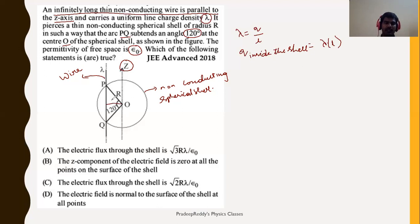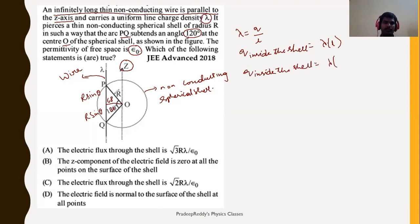Since the total angle is 120 degrees, each half-angle is 60 degrees. The half-length of the chord inside the shell is r sin(theta), so the total length inside is 2r sin(theta). The adjacent side is r cos(theta). Therefore, the charge q inside the shell is lambda times 2r sin(theta).